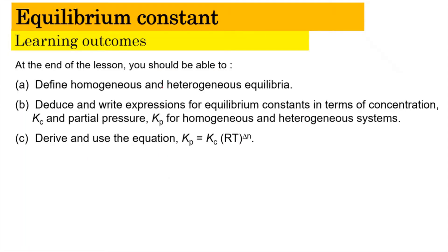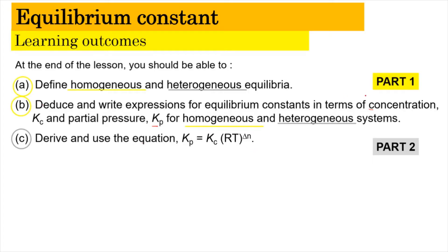In this video we're going to learn about the definition of heterogeneous equilibria, and we're also going to write the expression for the equilibrium constant in terms of concentration (Kc) as well as in terms of partial pressure (Kp) for the heterogeneous system. And last but not least, we're going to derive and use the equation Kp = Kc(RT)^ΔN. The other parts were covered in part one.